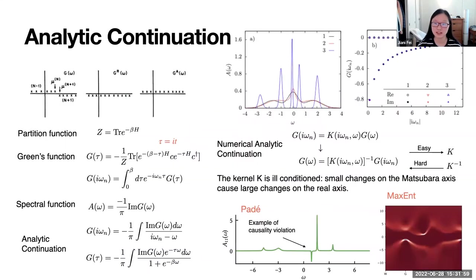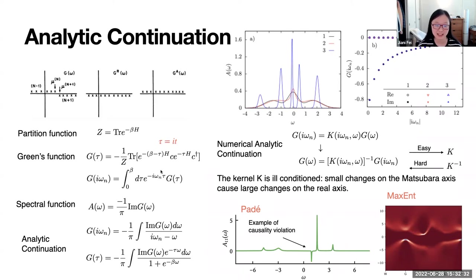We start with the motivation: why do we need analytic continuation? In quantum statistical mechanics, we have our core objects — the partition function and the Green's function. They depend on the Hamiltonian of our quantum system and also on beta, the inverse temperature. In finite temperature field theories, beta is paired with the imaginary time tau, which equals i times the real time T. With this imaginary time formalism, many calculations are made available, such as self-consistent diagrammatic methods in simulations of materials.